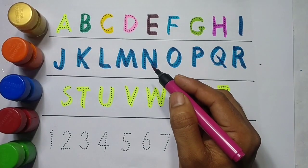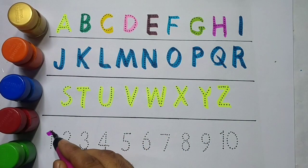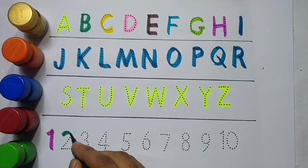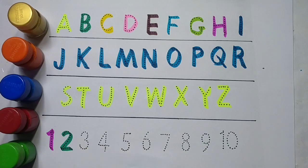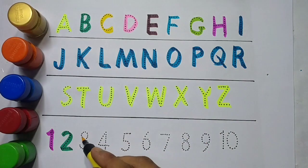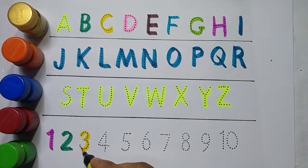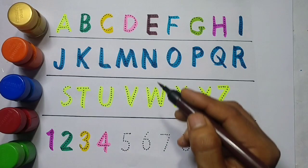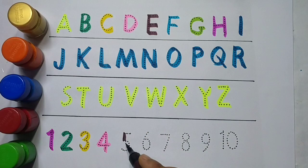Purple color, one. Green color, two. Yellow color, three. Pink color, four. Brown color, five.